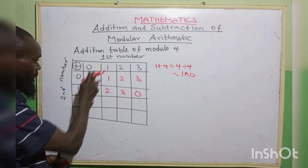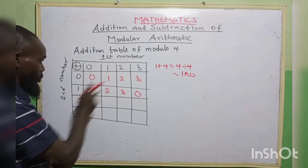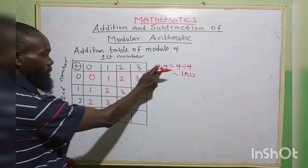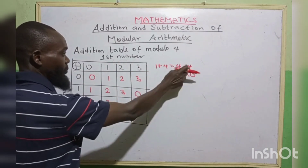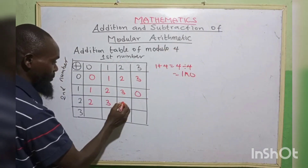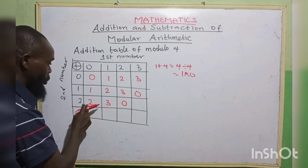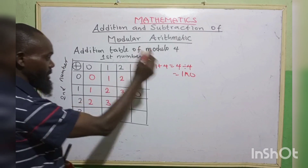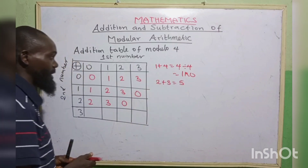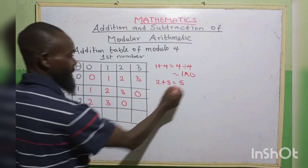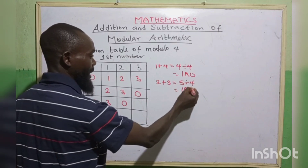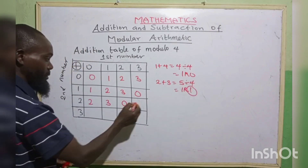For the row starting with 2: 2 plus 0 is 2. 2 plus 1 is 3. 2 plus 2 is 4 — how many 4s in 4? We have 1 remainder 0, so we write 0. Then 2 plus 3 is 5, which is above our modulo. How many 4s in 5? We have 1 remainder 1, so we write 1.